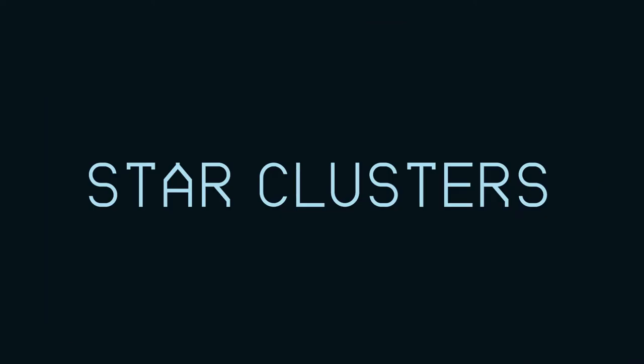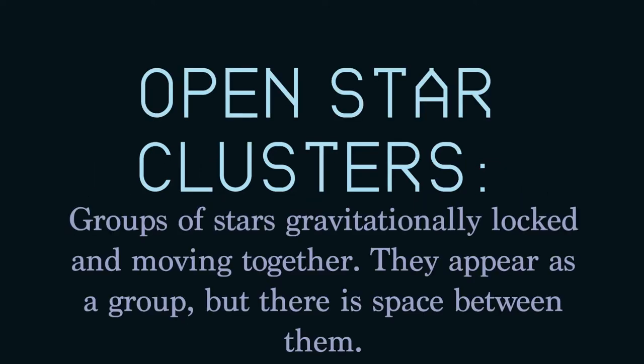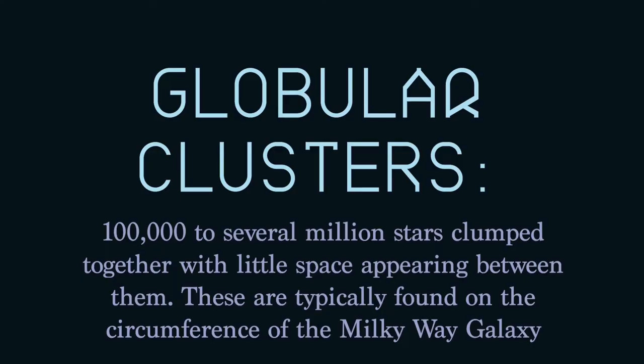Star clusters: there are two types of star clusters — open star clusters and globular star clusters. Open star clusters are groups of stars gravitationally locked and moving together; they appear as a group but there is space between them. Globular star clusters are clumped — there may be a hundred thousand to several million stars so close together that it's hard to see the space between them. These star clusters are typically located on the circumference of our Milky Way galaxy.